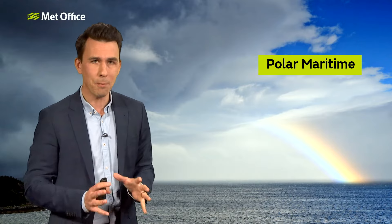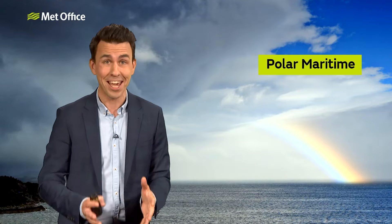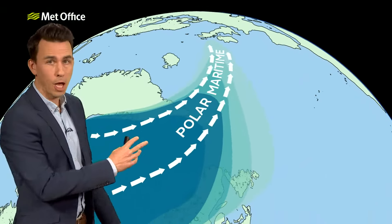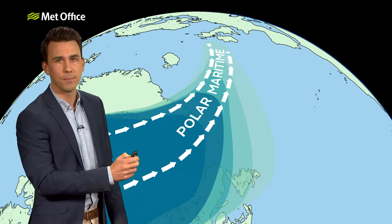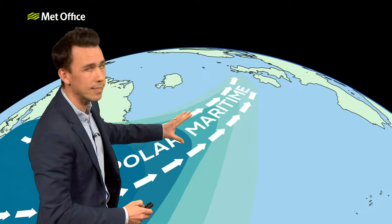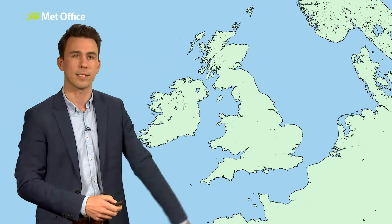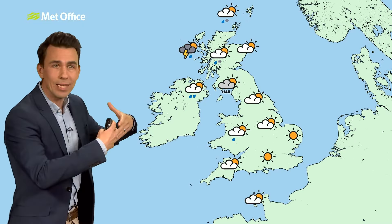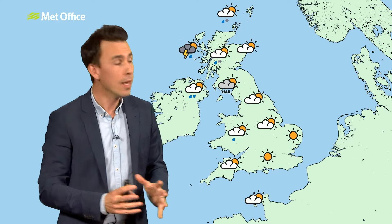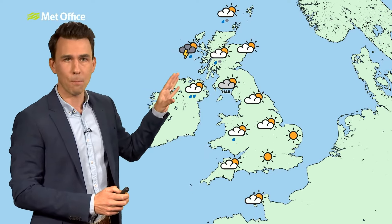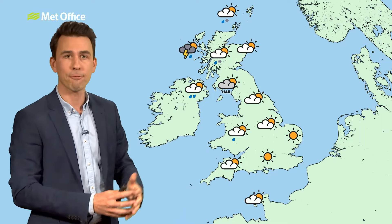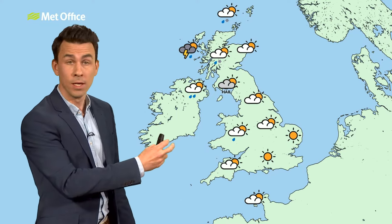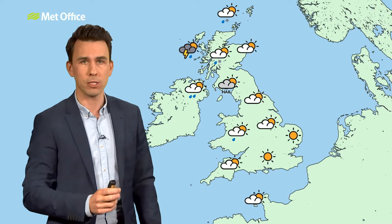Polar maritime. The polar maritime air mass can bring us four seasons in one day. It normally starts in Greenland or Arctic Canada, a cold source region, especially in winter. But there's a long journey over the North Atlantic before it reaches the UK on a brisk northwesterly wind. Compared to the polar air, the ocean is much warmer. This air mass is effectively heated from below, making it unstable. Beefy cumulus and cumulonimbus clouds bubble up and arrive from the northwest, bringing frequent showers of rain, hail, thunder, lightning, and in the winter, sleet and snow. Between the showers, there will be some sunshine, but it will feel chilly.